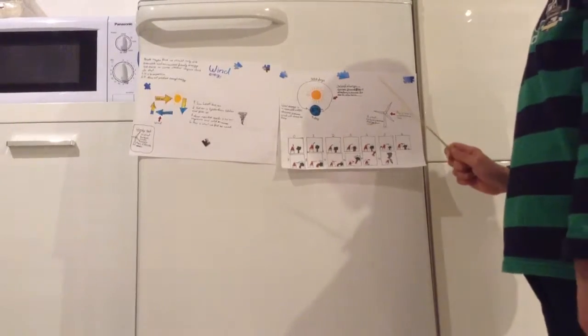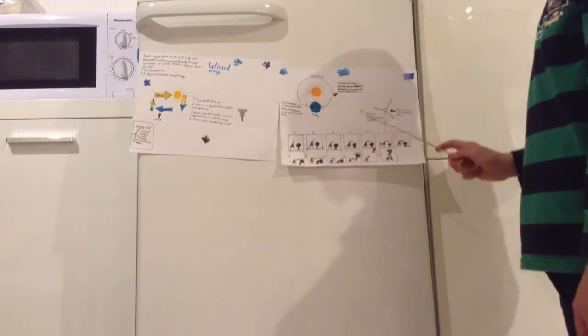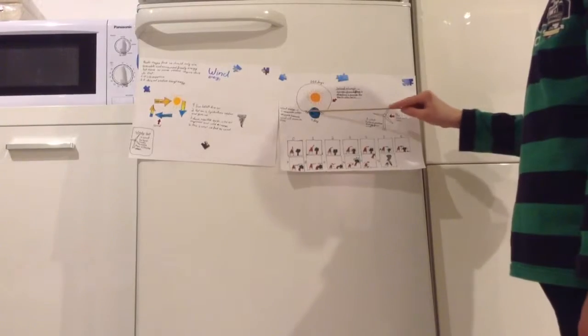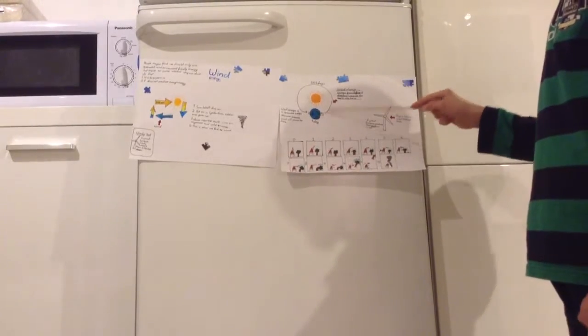Wind always comes from different directions because the earth turns around itself. When the earth turns one time around itself, it's one day, 24 hours.